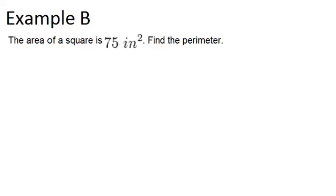In example B, it says the area of a square is 75 inches squared. Find the perimeter. Okay, so a square is a rectangle that has all 4 sides the same length. So we know that the area of this square was 75 inches squared.